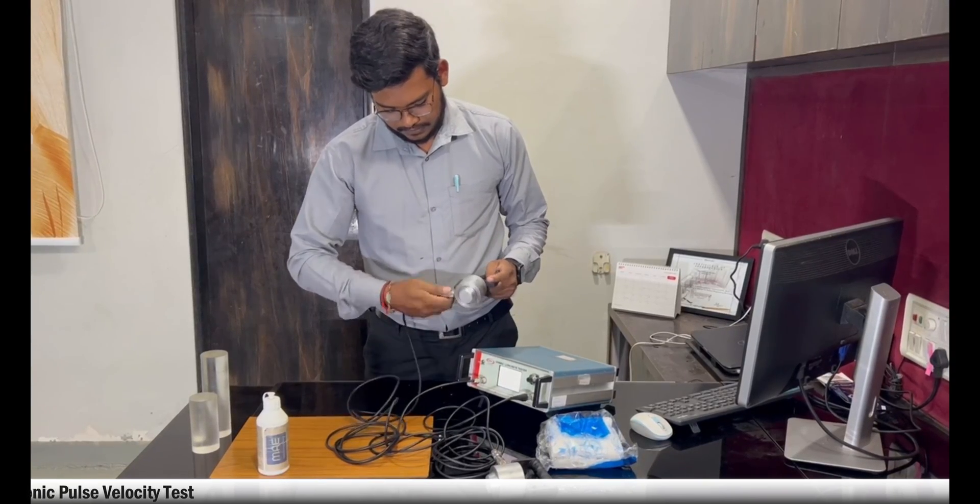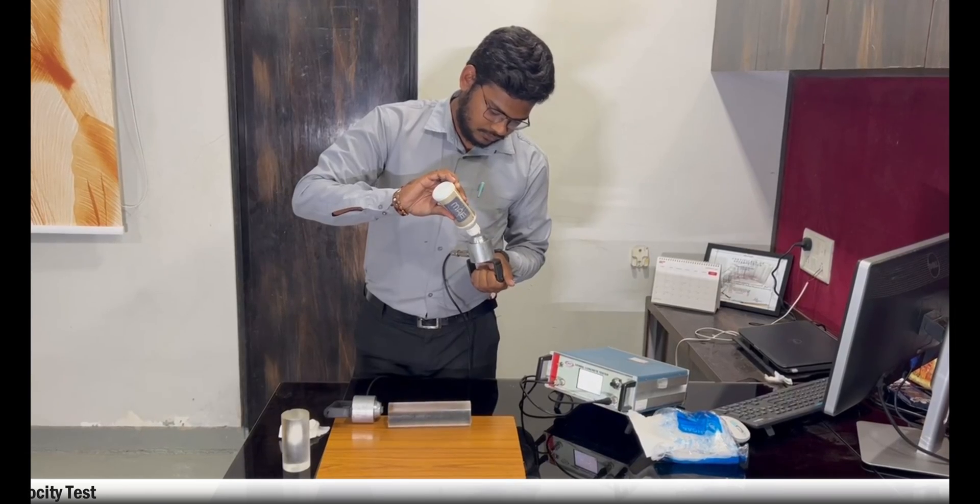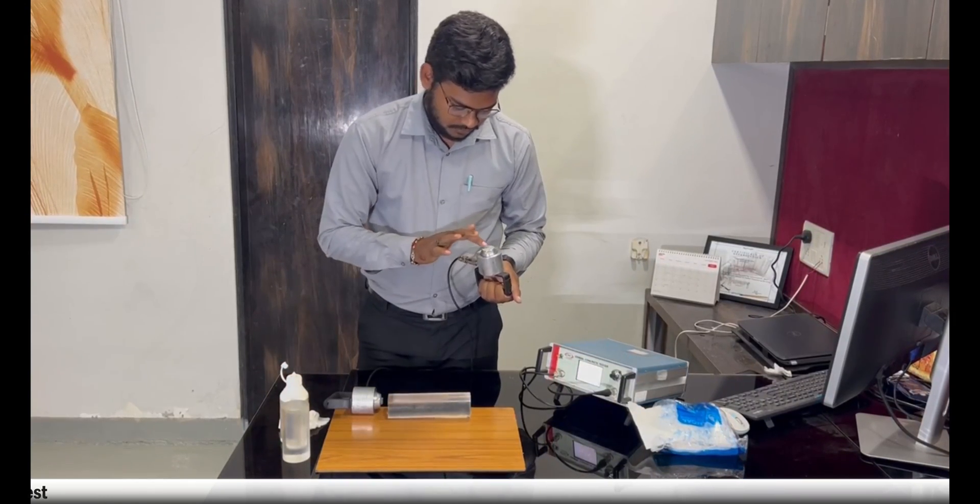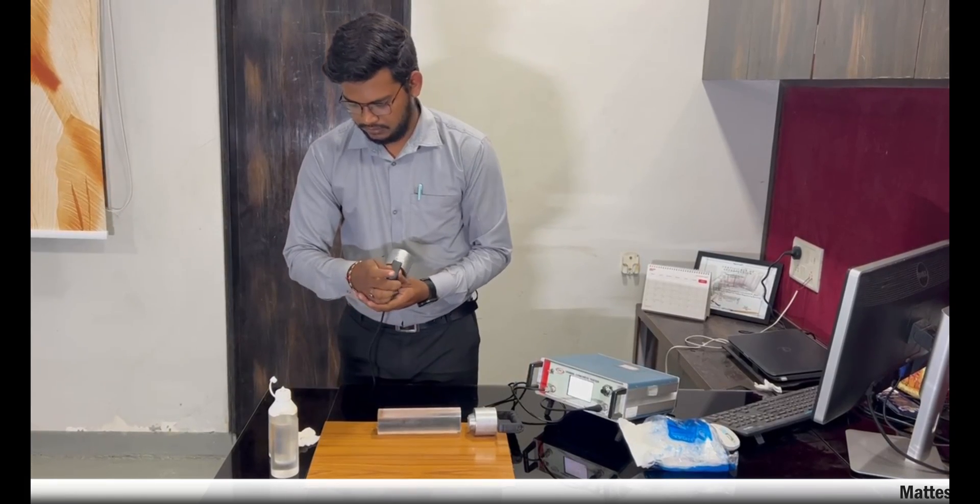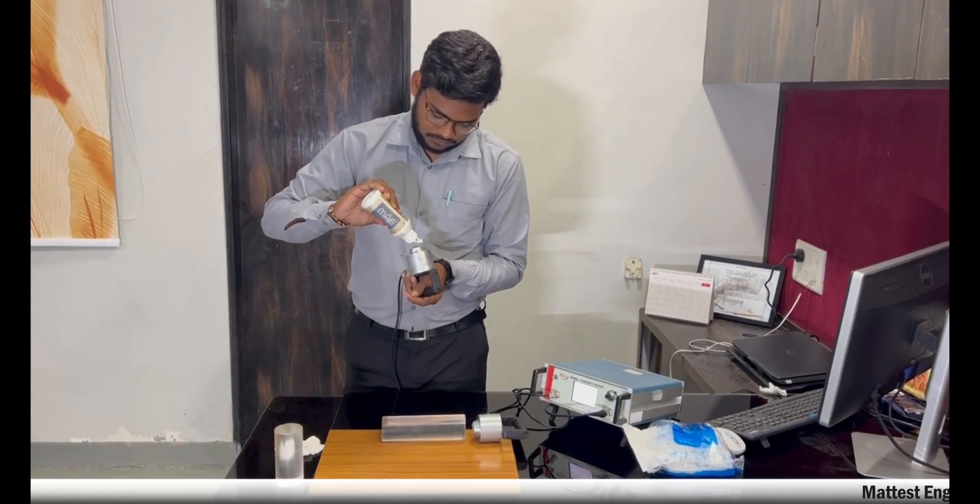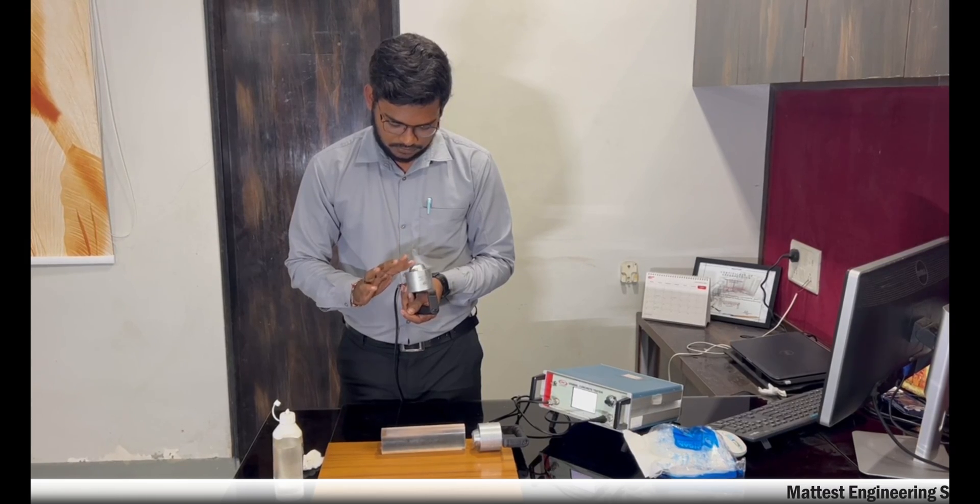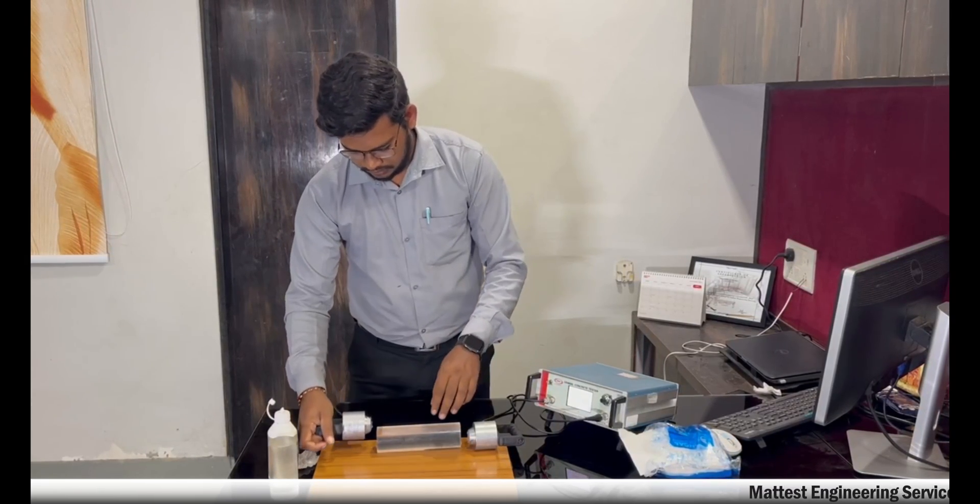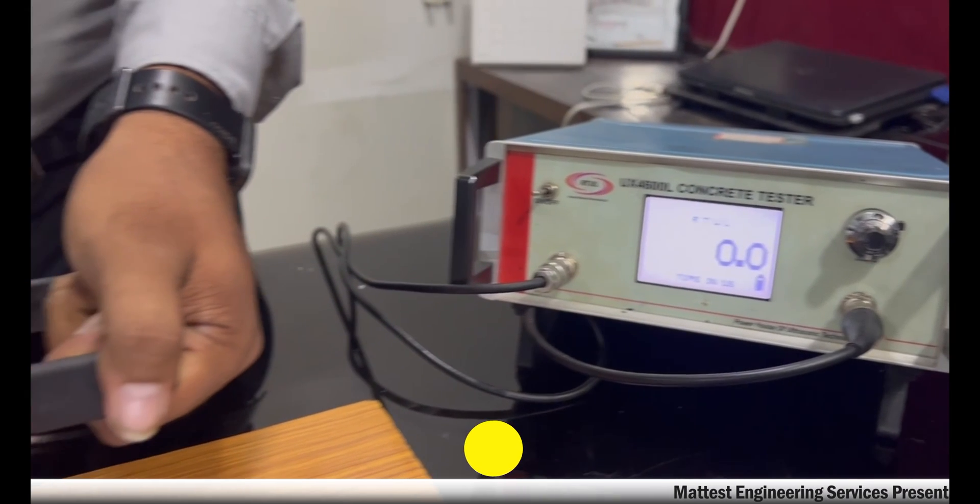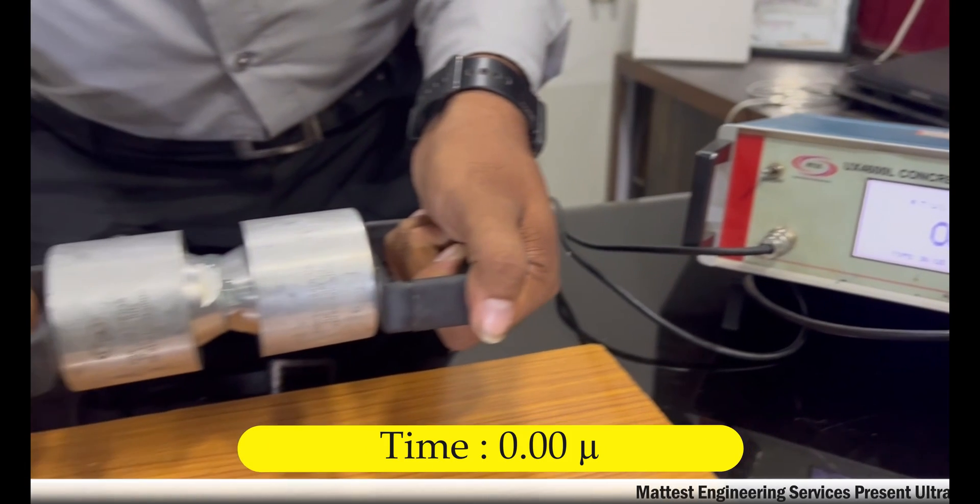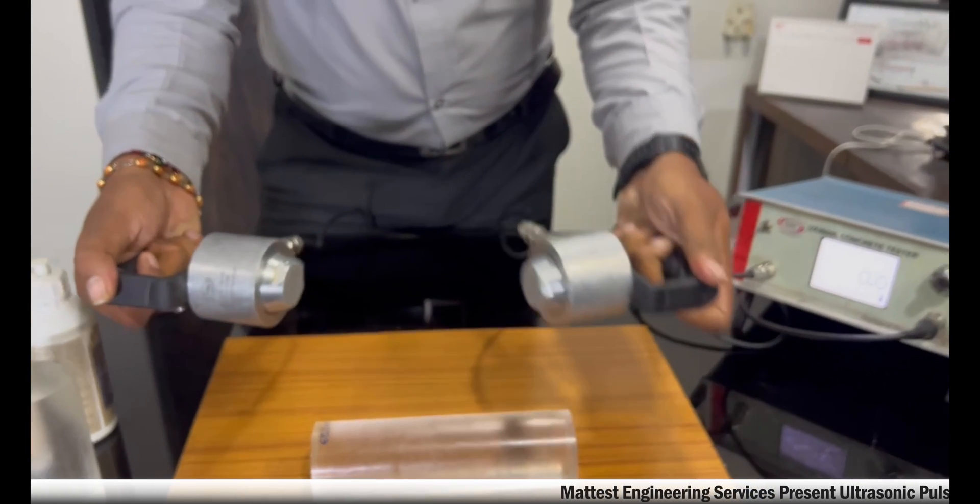Connect the ultrasonic transducers to the UPV machine. Typical couplants are petroleum jelly or grease used for very rough concrete surfaces. It is required to smoothen and level an area of the surface where the transducer is to be placed. Ensure proper cable connections and probe alignment. Perform a zero calibration by placing the transducers in contact without any material between them. This establishes a baseline signal level.